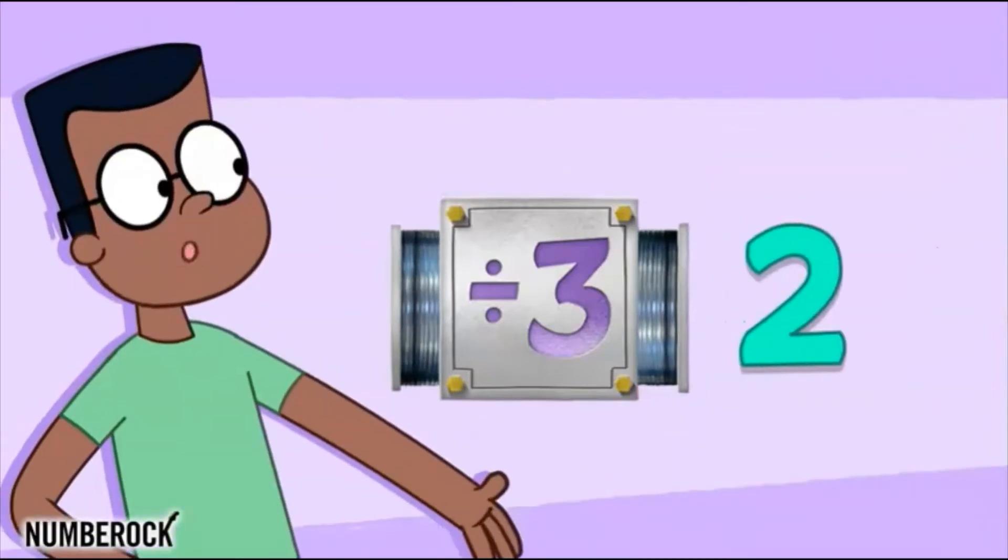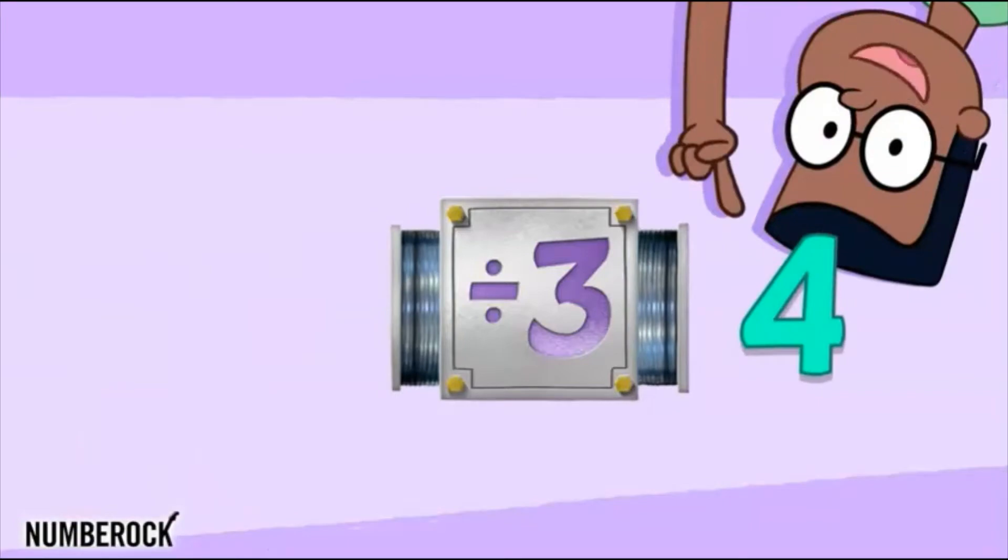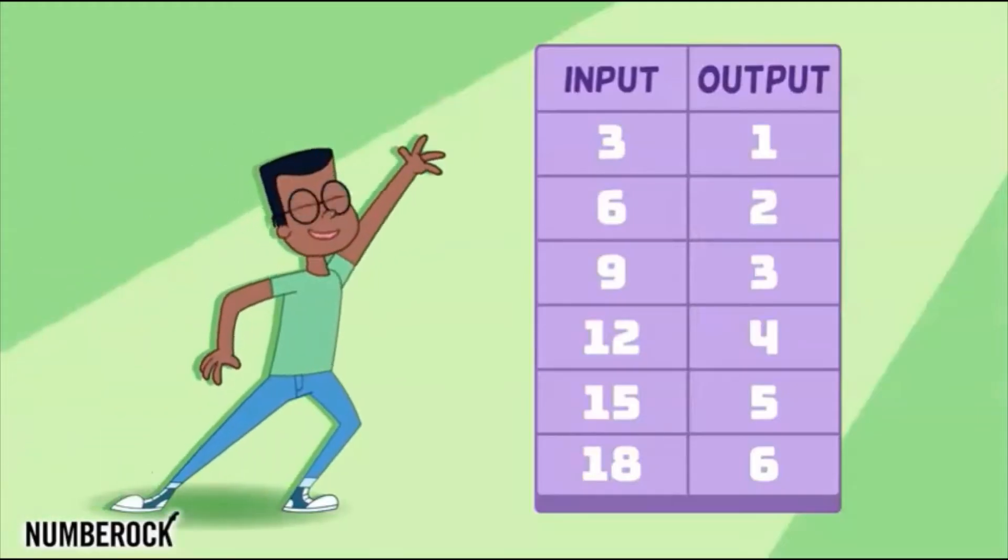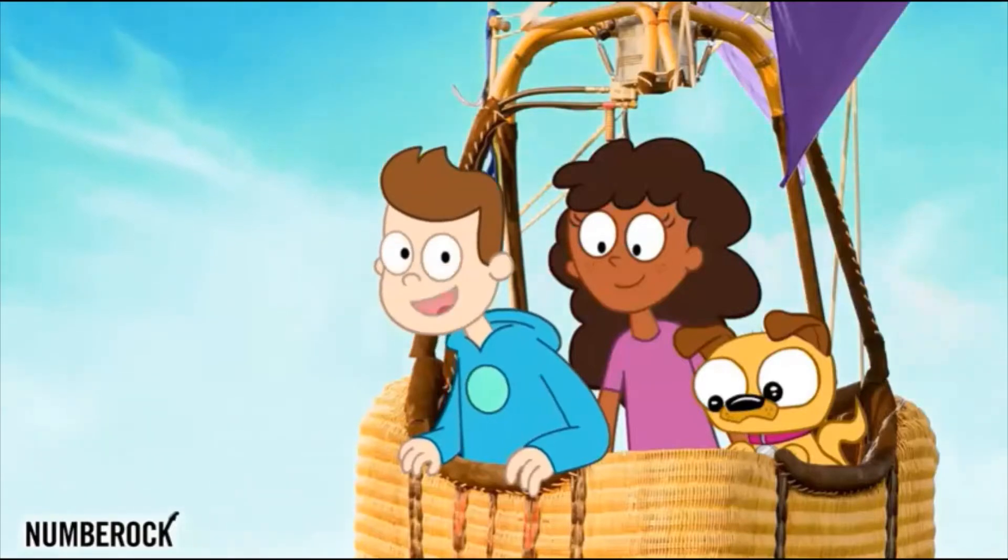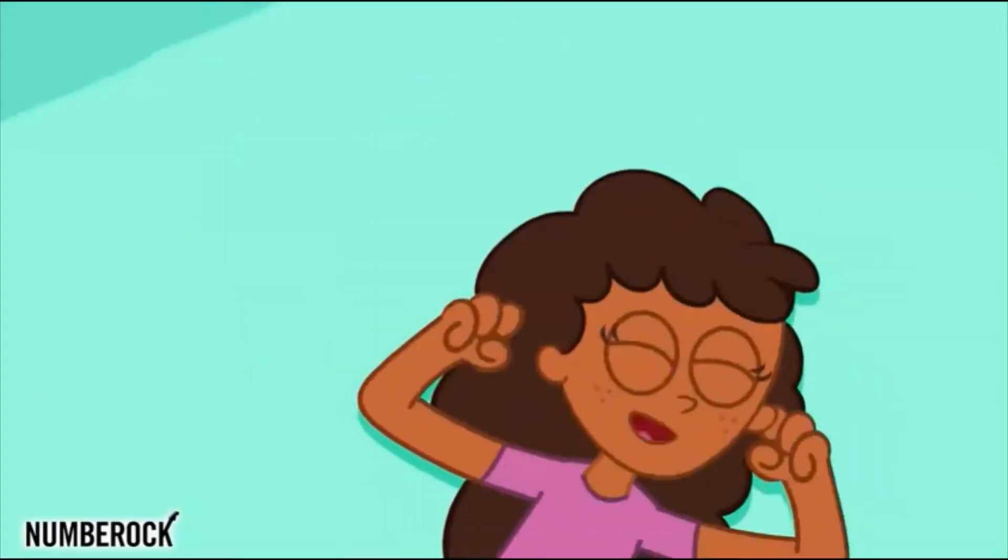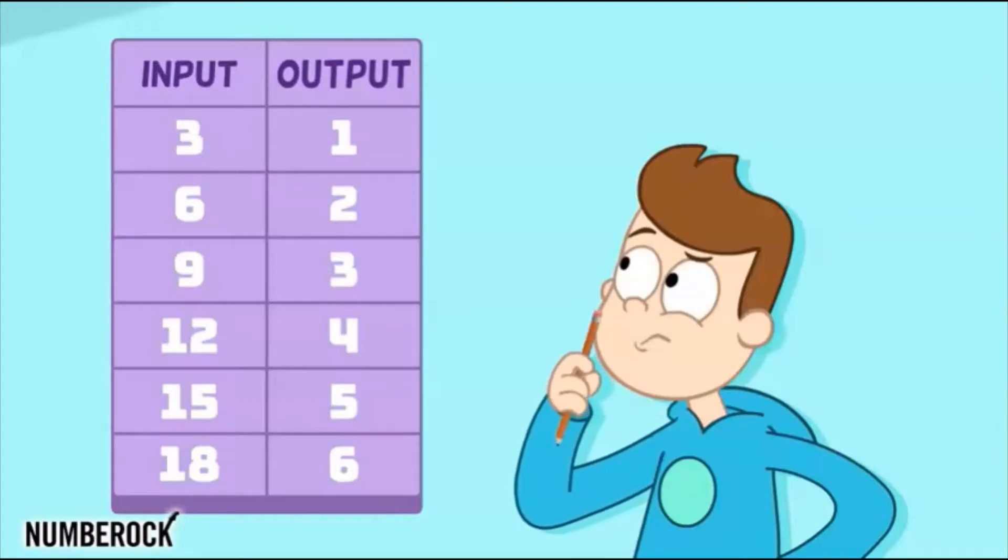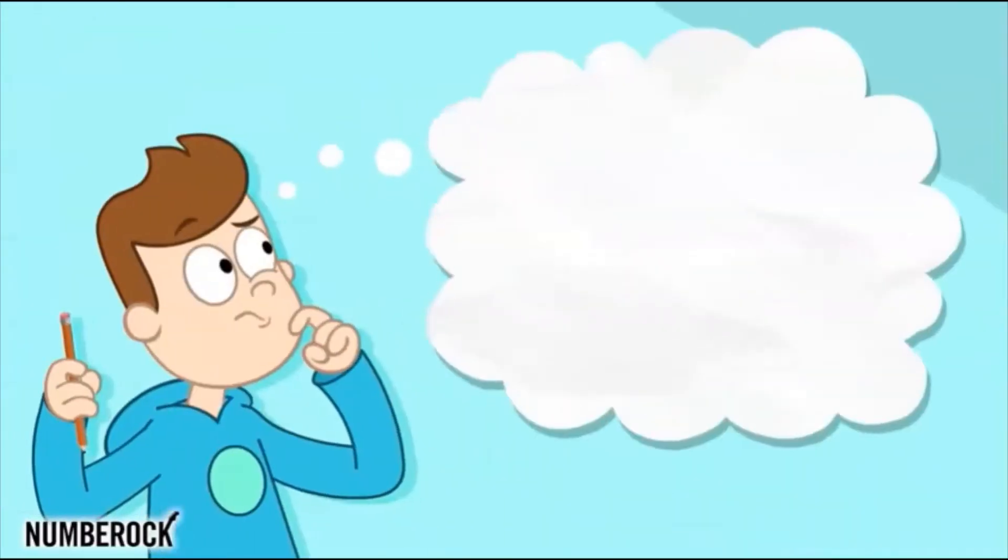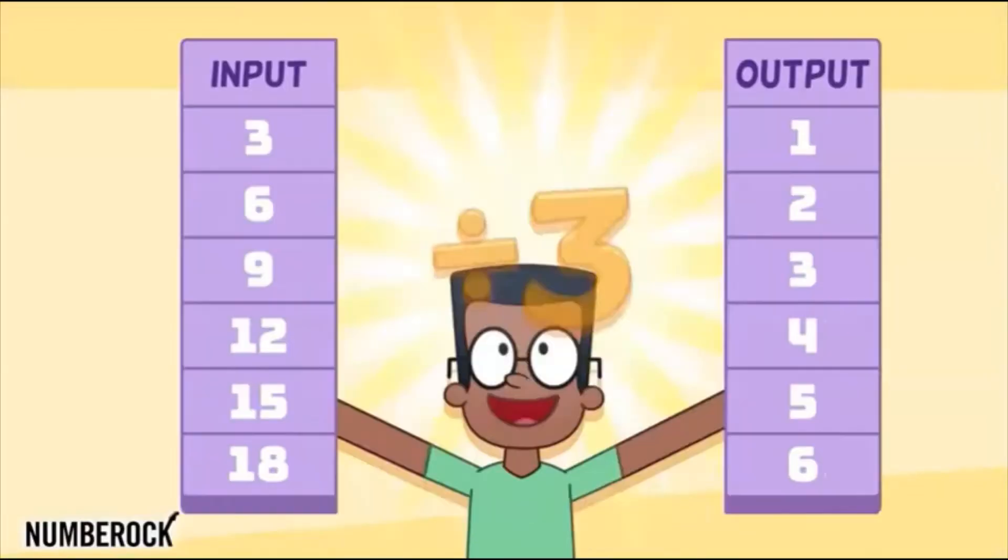In goes six, out comes two for sure. In goes twelve, and you know out will come four. This input output table has a rule. It's divide by three. Man, that's pretty cool. What's happening between the in and the out? You can always find out without any doubt. Make an educated guess and test it out. Till you find what the rule is all about.